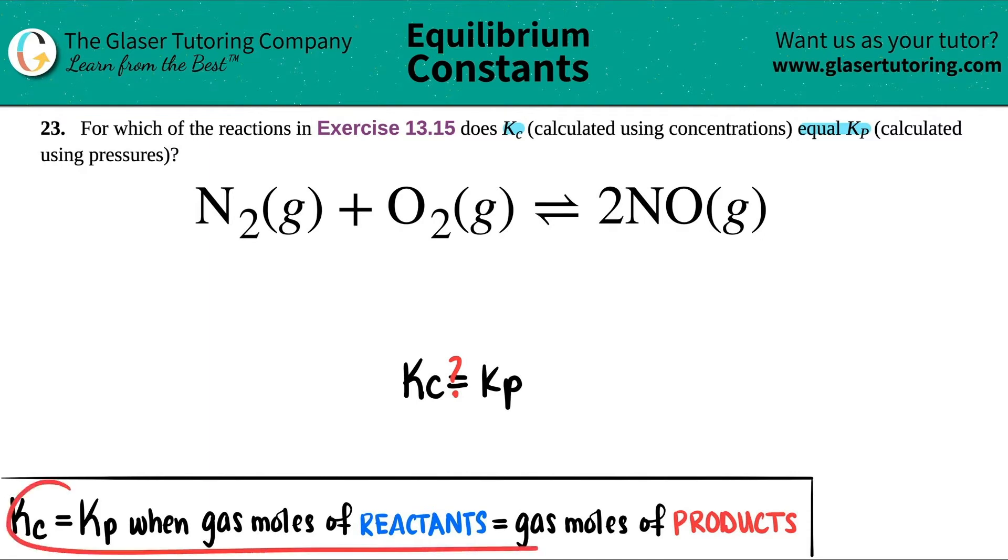Well, I wrote down the rules here. If Kc equals Kp, that means that the gas moles on the reactant side equal the gas moles on the product side.